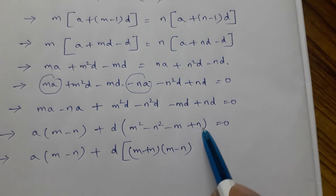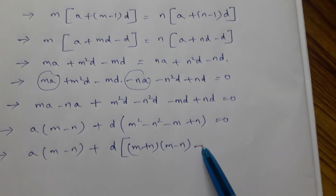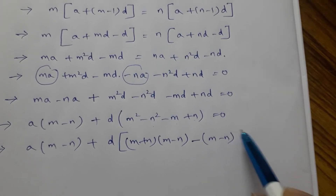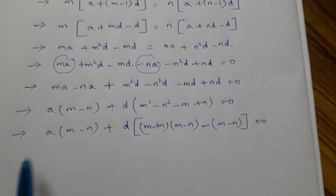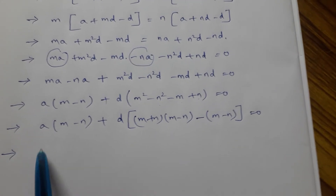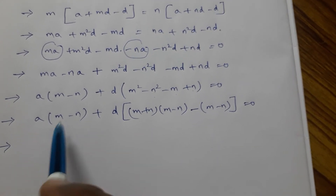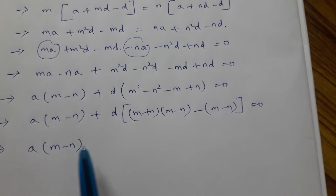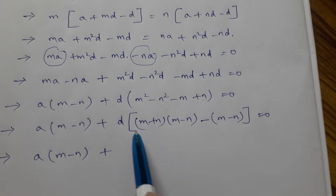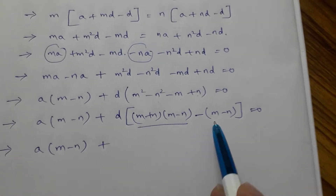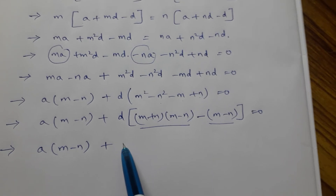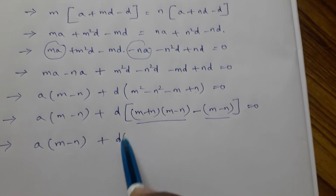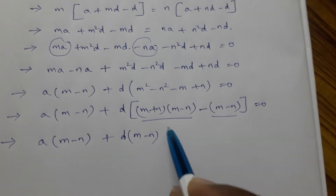In the last two terms, take minus common to get minus(m minus n). So we have: a(m minus n) plus d times [(m+n)(m−n) minus (m−n)]. We can now take (m minus n) common from both parts of the d terms.